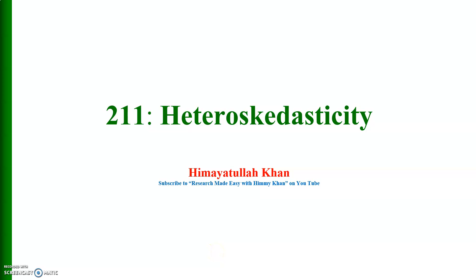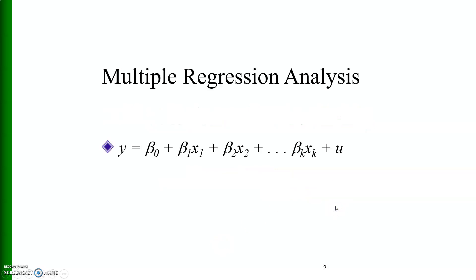Welcome to this video on heteroscedasticity. Let me start with the multiple regression model of the form where y is equal to beta naught plus beta 1 x1 plus beta 2 x2 up to beta k xk plus u, where u is the error term.